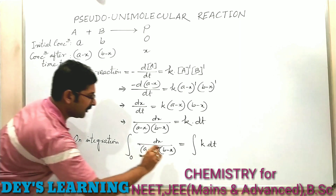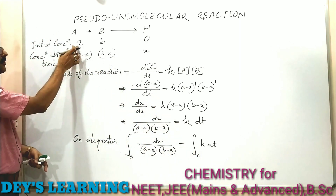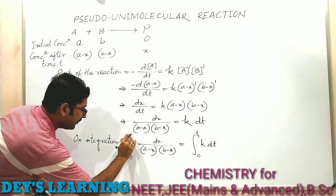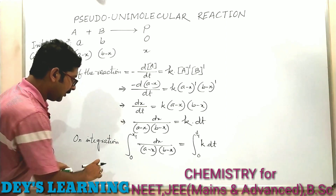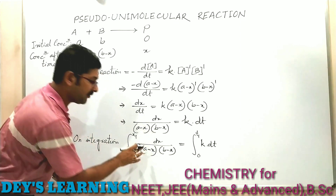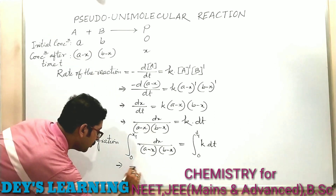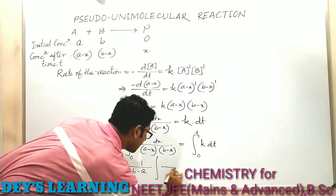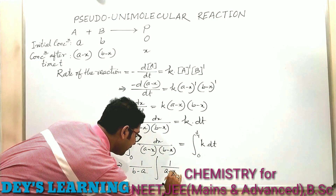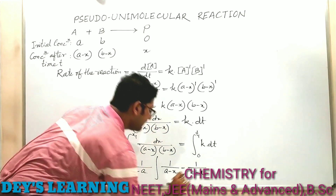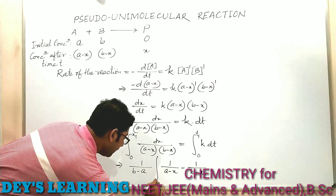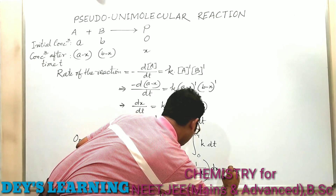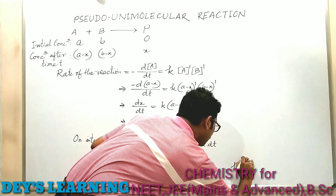The lower limit is 0: when t equals 0, x was 0, and when t equals t1, x equals x1. We solve this integration by the partial fraction method, giving 1/(B minus A) times the integral of [1/(A minus x) minus 1/(B minus x)] from 0 to x1, equal to K times the integral from 0 to t1 of dt, since K is independent of time.